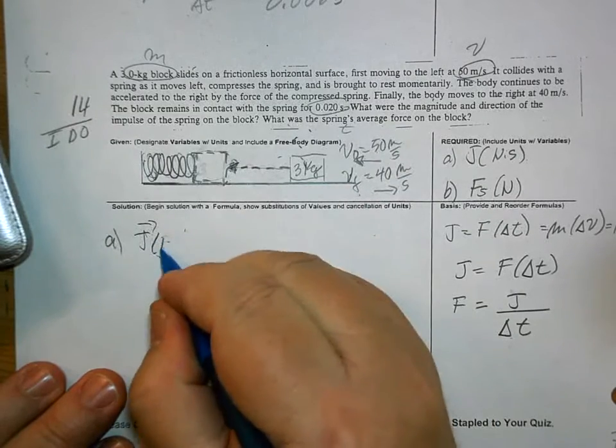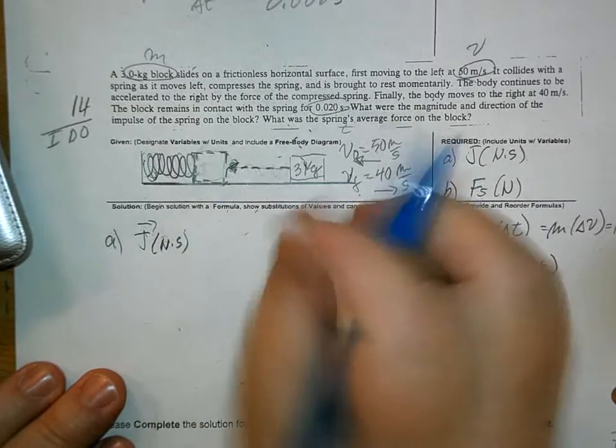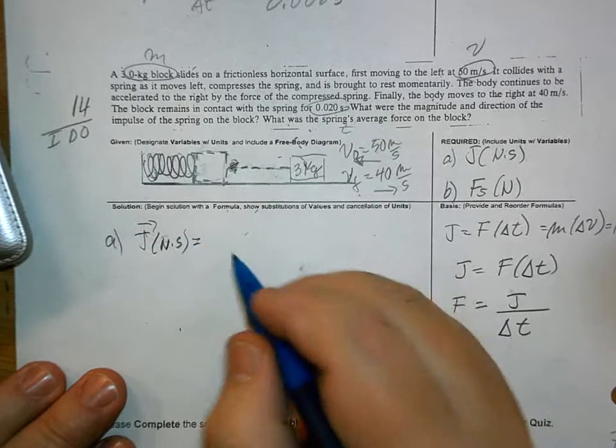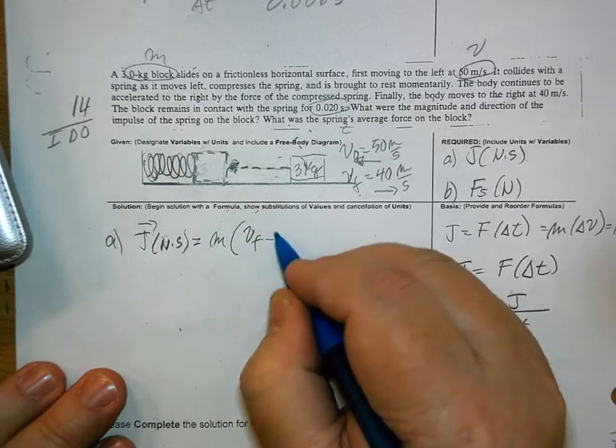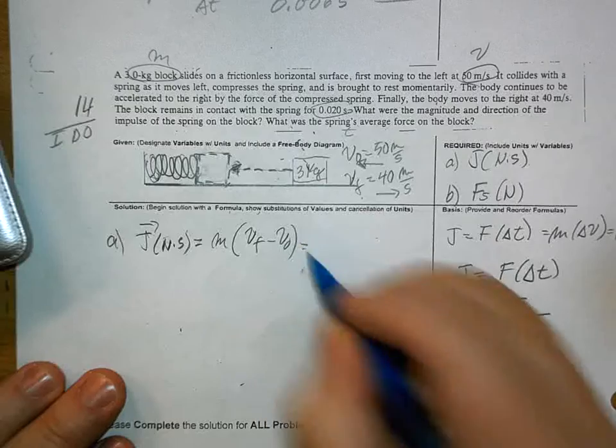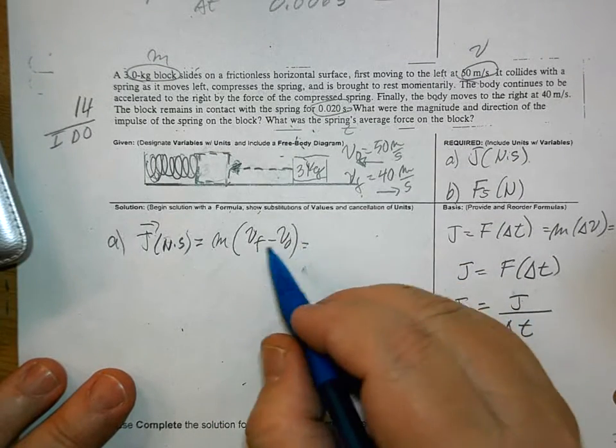This is in Newton seconds, is equal to M VF minus V0. Watch very carefully about the signs.